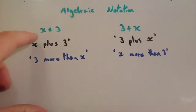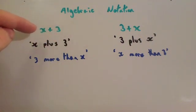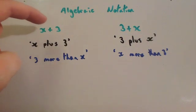So here we've got x plus 3. This means x plus 3. For instance, if x was the number 10, you would do 10 plus 3, which would be 13. You read it as x plus 3, or another way to read it is 3 more than x. If you've got x and you add 3, you're going to get 3 more than whatever x is.